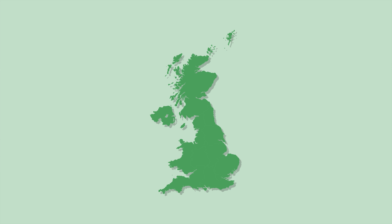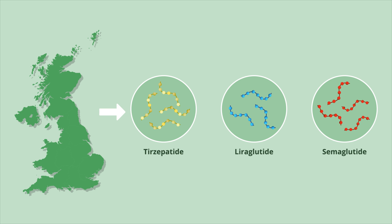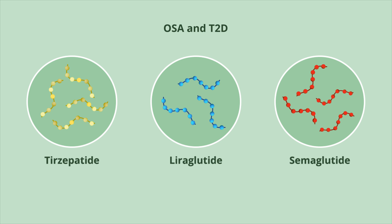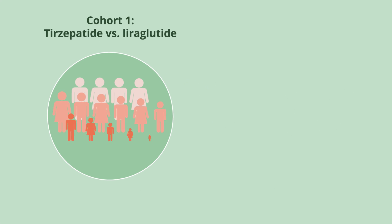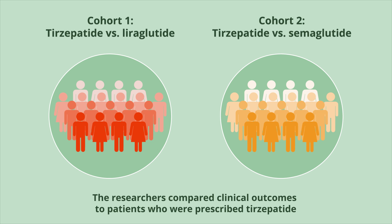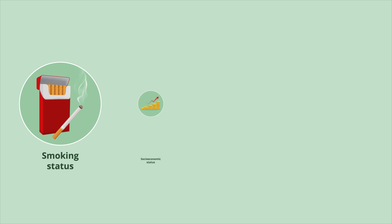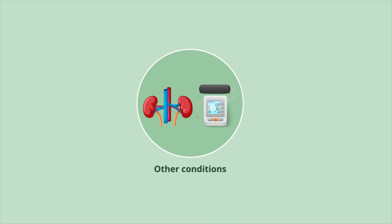To bridge the knowledge gap, researchers in the UK performed a comparative analysis of the relative impacts of trisepatide, loraglutide, and semaglutide on cardiometabolic health outcomes, aiming to assess their relative effectiveness in reducing major adverse cardiovascular events, or MACE, in patients with OSA and type 2 diabetes. The study was a retrospective analysis of data from patients living in both North America and Western Europe. With patients prescribed loraglutide or semaglutide as reference groups, researchers compared clinical outcomes to patients prescribed trisepatide. Patients with type 1 diabetes or previous cardiovascular events were excluded. The cohorts were matched for factors including age, sex, ethnicity, smoking status, socioeconomic status, body mass index, hemoglobin A1c, presence of other conditions such as kidney dysfunction or hypertension, and medications.